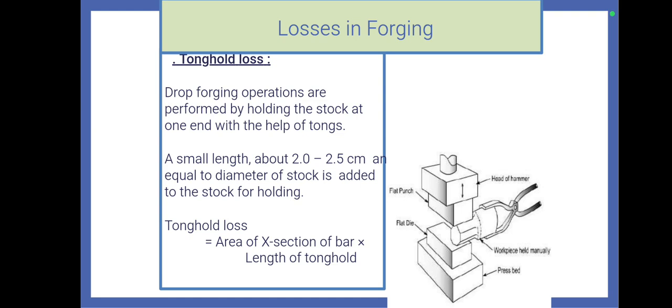Next, tongue hole loss. While performing some forging operations, some length of the stock at one end is required for holding the stock in a tong. This small extra length will be removed after completion of the work piece. This loss is known as tongue hole loss.